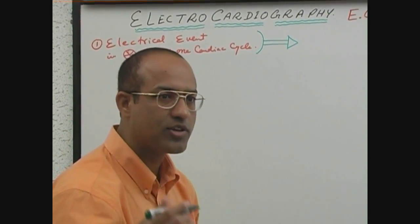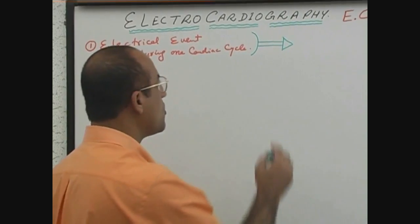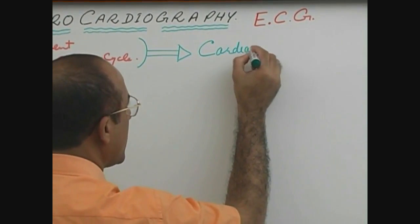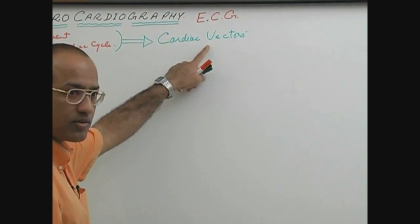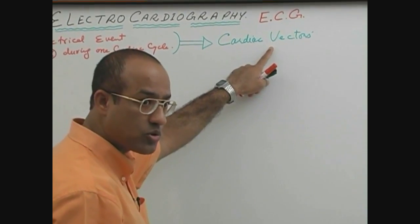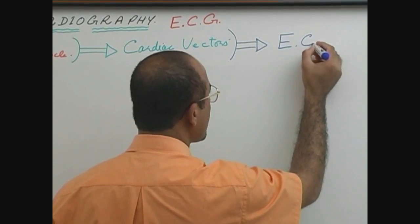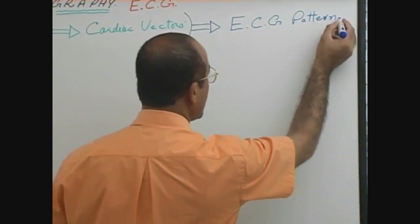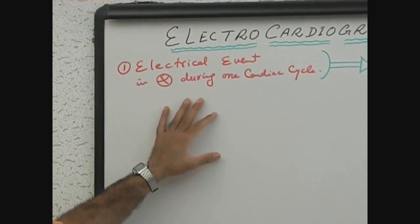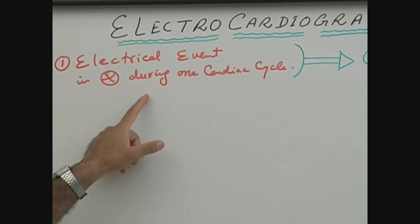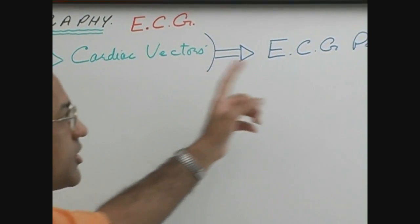We will see how the different electrical events in the heart during one cardiac cycle translate or lead to the formation of cardiac vectors. Then we will see how these cardiac vectors, produced during one cardiac cycle, are translated into an ECG pattern — different waves and intervals. So our further discussion is in three phases: first, the electrical events in the heart; second, the cardiac vectors produced; and third, how those vectors translate into ECG pattern.